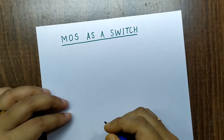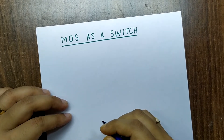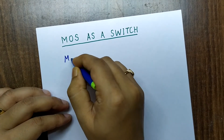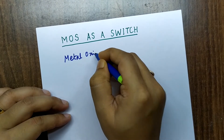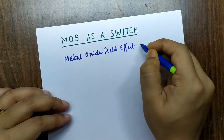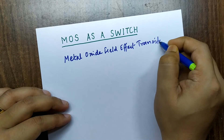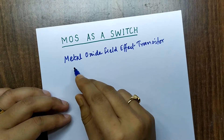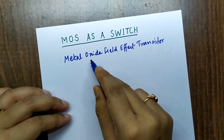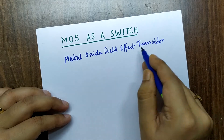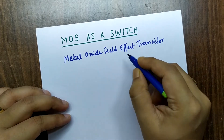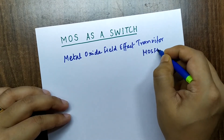Hello friends, today we are going to discuss about MOS — that is MOSFET, which stands for Metal Oxide Field Effect Transistor. We call it as MOSFET, or in short form MOFET: Metal Oxide Field Effect Transistor.